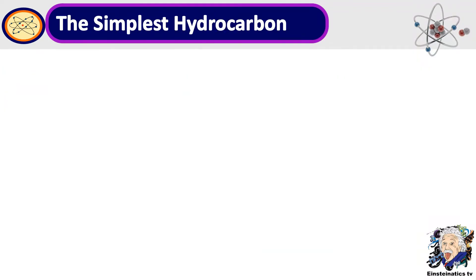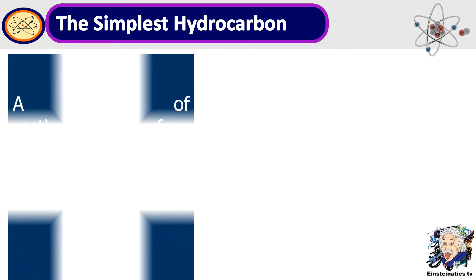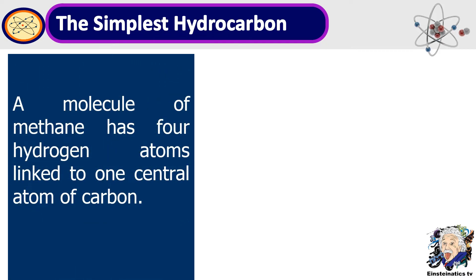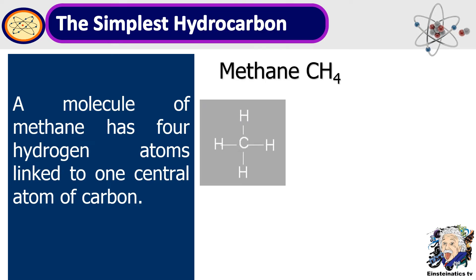Here's an example of the simplest hydrocarbon. One example is the molecule called methane. Methane has four hydrogen atoms linked to one central atom of carbon, so the chemical formula of methane is CH4. Here is its structural formula.